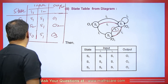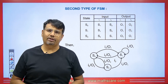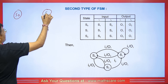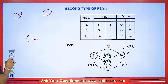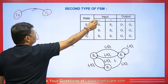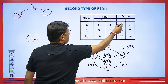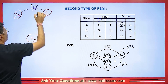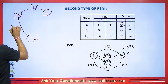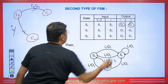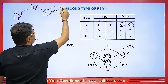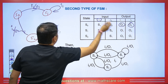Sometimes we are given two inputs corresponding to two outputs. For S0 going to S1, the input is I1 and the output is O1. S0 going to S2 has input I2 and output O2. S1 makes a self-loop with input I1 and output O1. S1 going to S0 has input I2 and output O3.